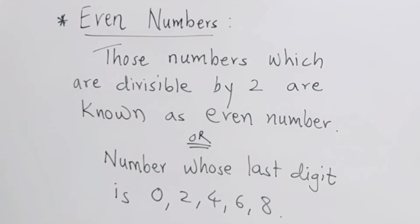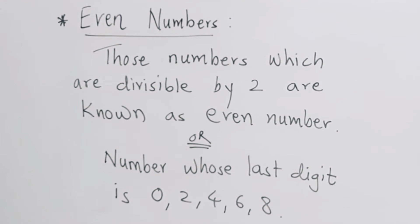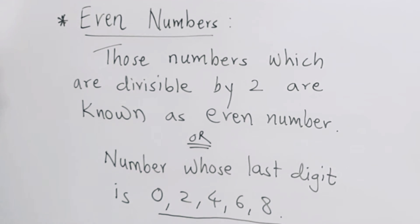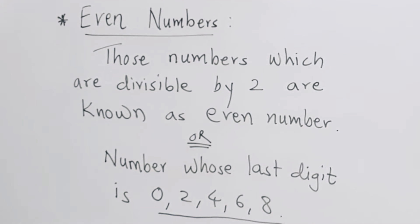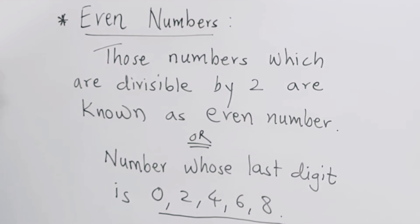Now, what are even numbers? Those numbers which are divisible by 2 are known as even numbers. Or, numbers whose last digit is 0, 2, 4, 6, or 8 — if the last digit of a number is 0, 2, 4, 6, or 8, the number is an even number.